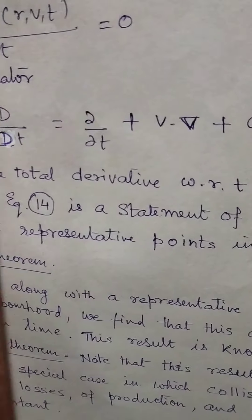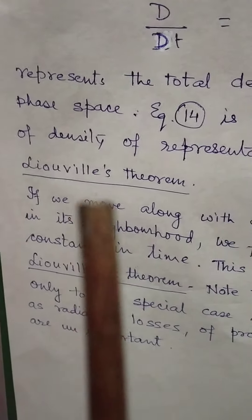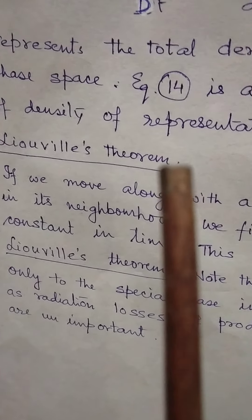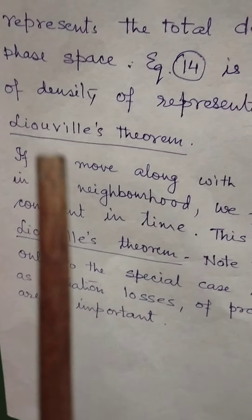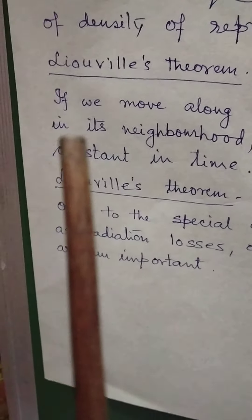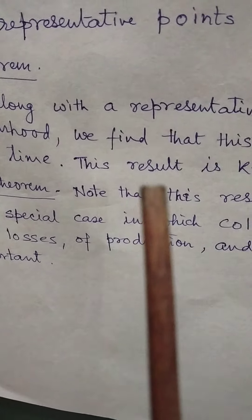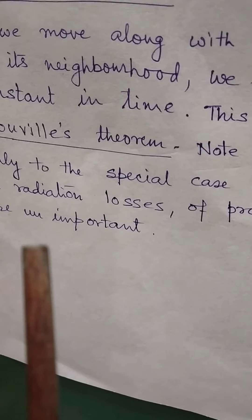This is all about the Boltzmann equation. There is also a related theorem known as Liouville's theorem. If we move along with a representative point f_alpha(r, v, t) in its neighborhood, we find that this density remains constant in time — this result is known as Liouville's theorem. Note that this result applies only to the special case in which collisions, as well as radiation losses, production, and loss of particles, are unimportant.